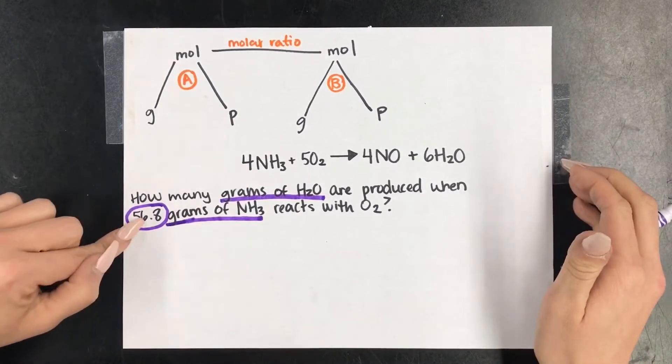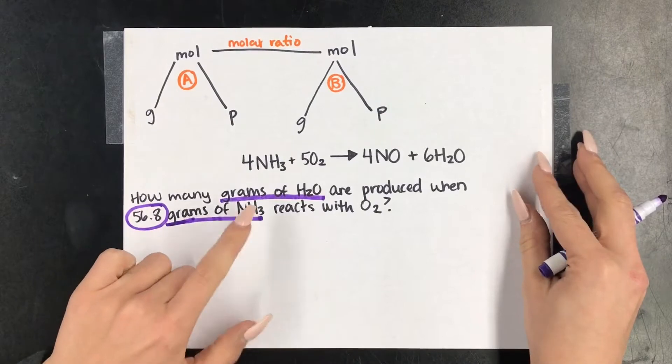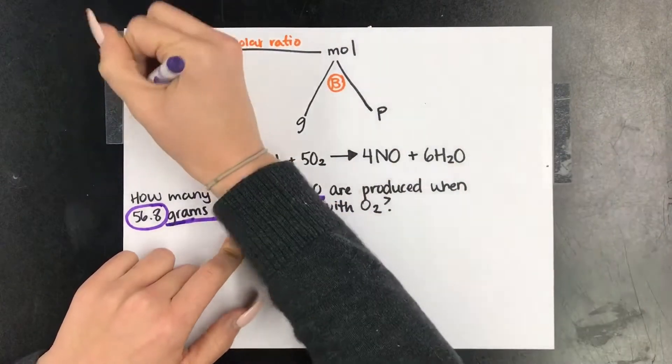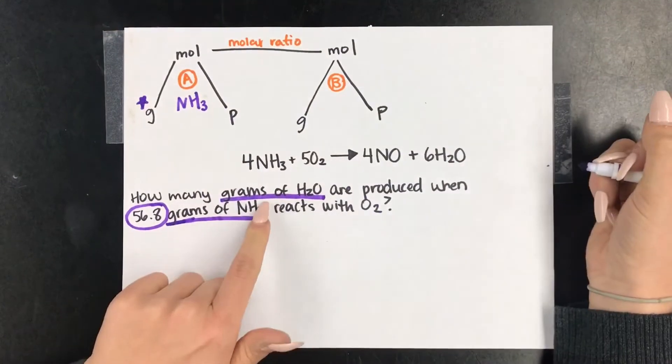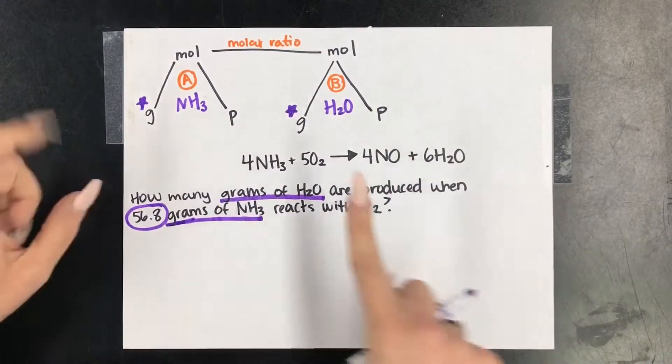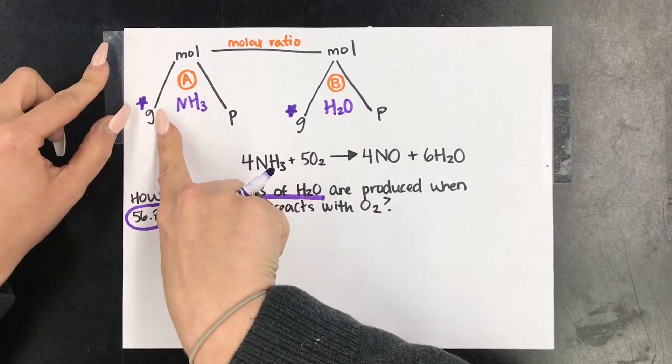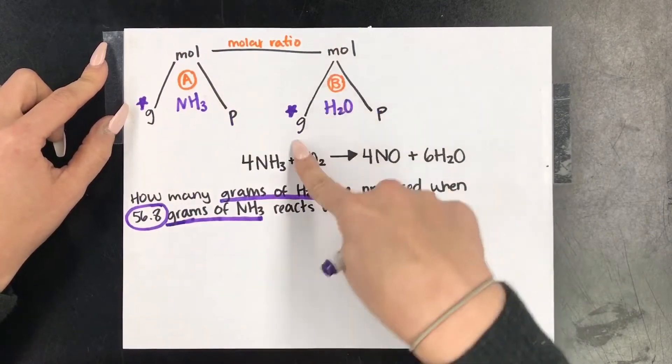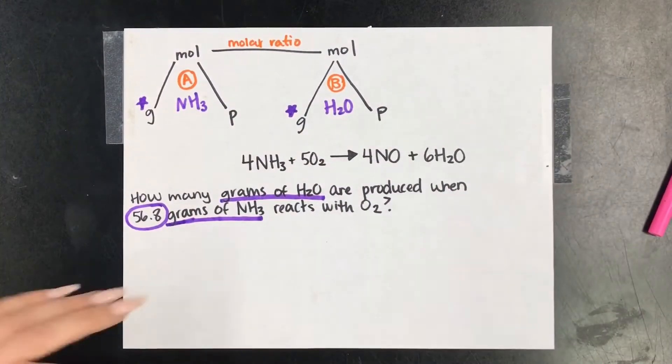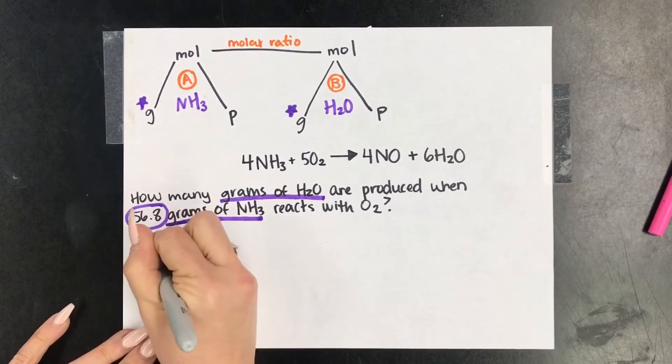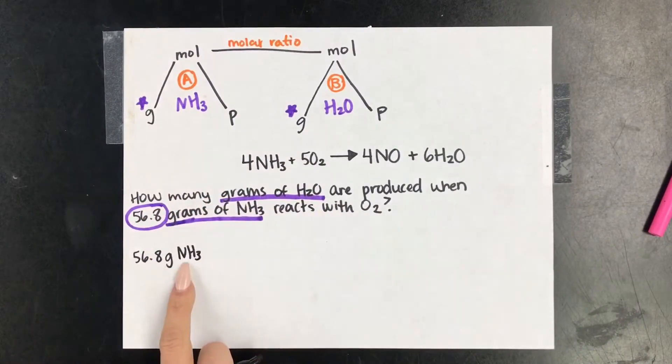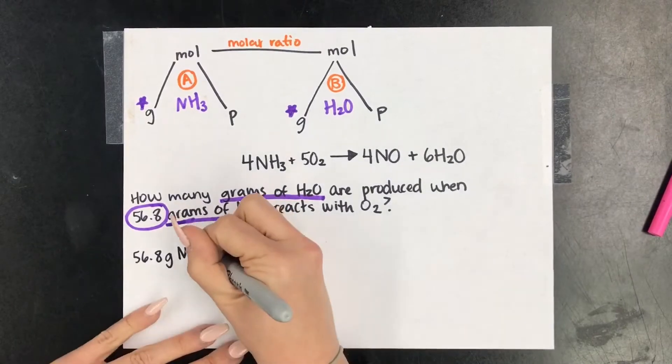Okay, so we always start with the number and the unit attached to it. Grams of NH3. That means mountain A is NH3. So we're starting here and going towards grams of H2O, which means if every line is a step and you cannot go where there's not a path, this will be a one, two, three step problem ending with grams of H2O. So let's go ahead and set this up. Starting with our number, grams of NH3.